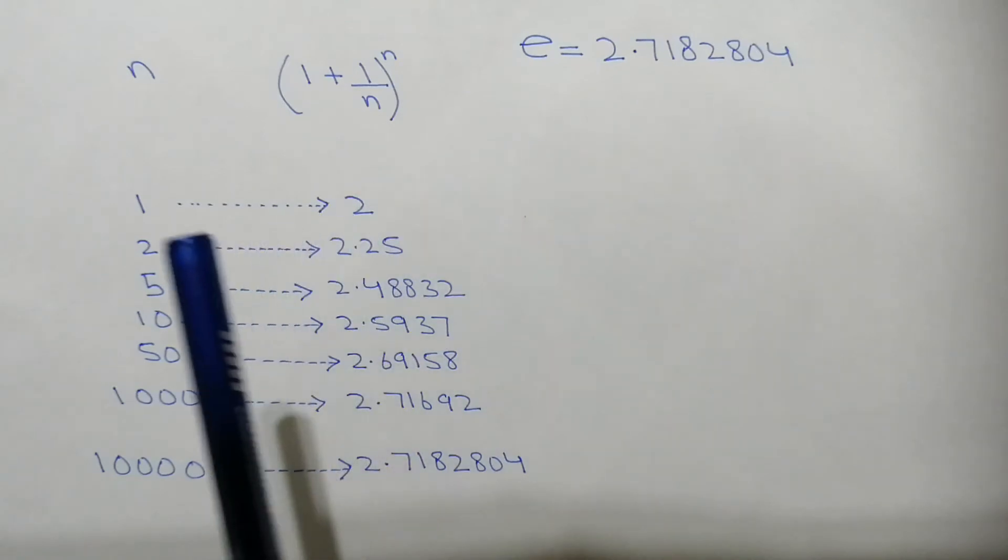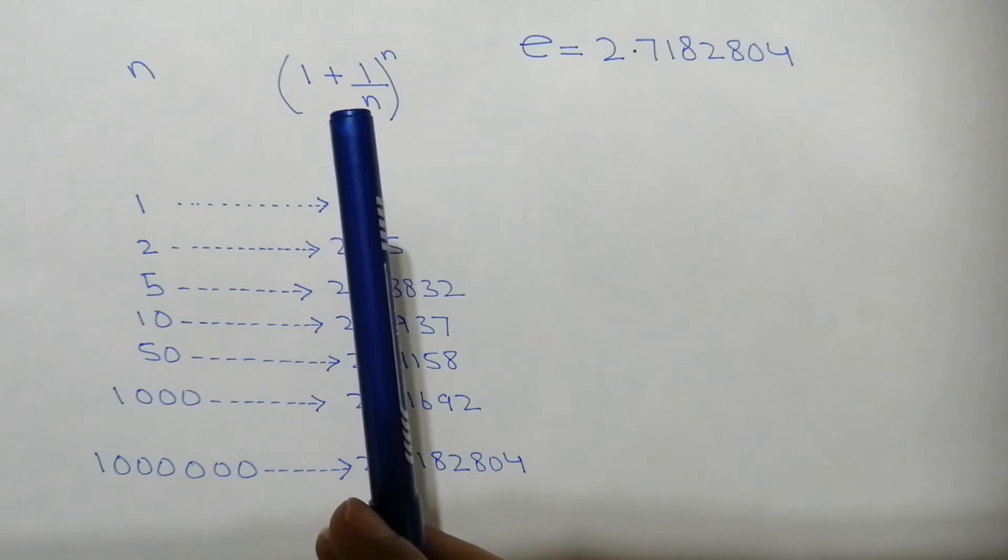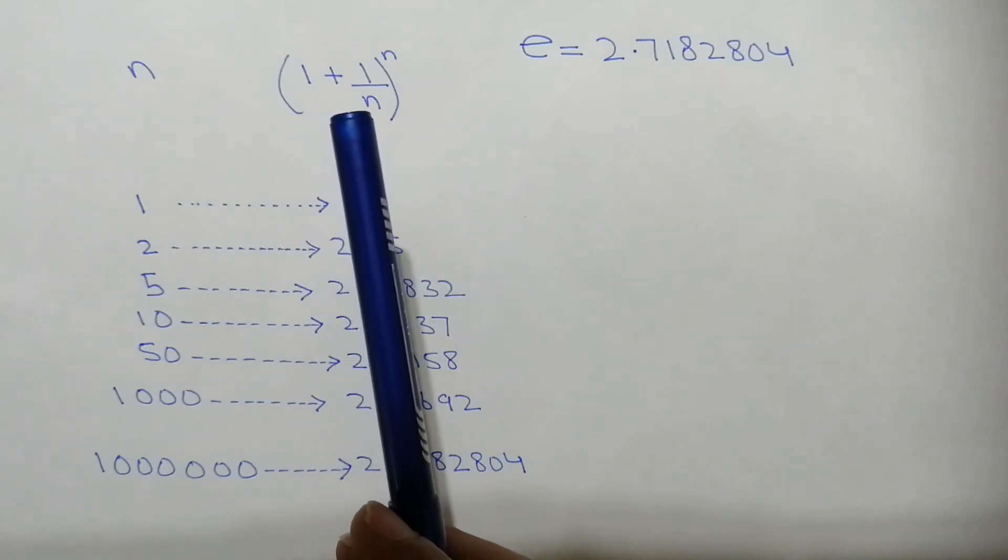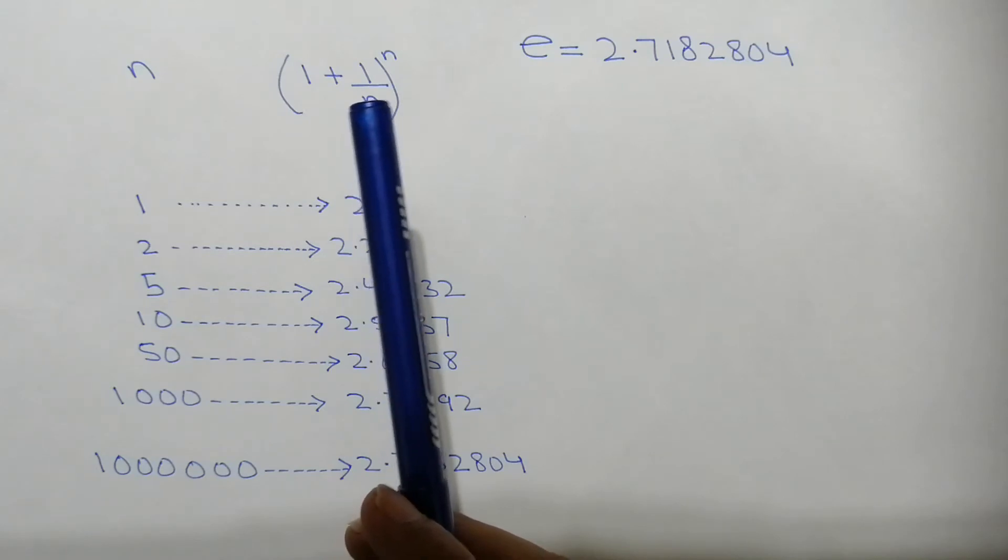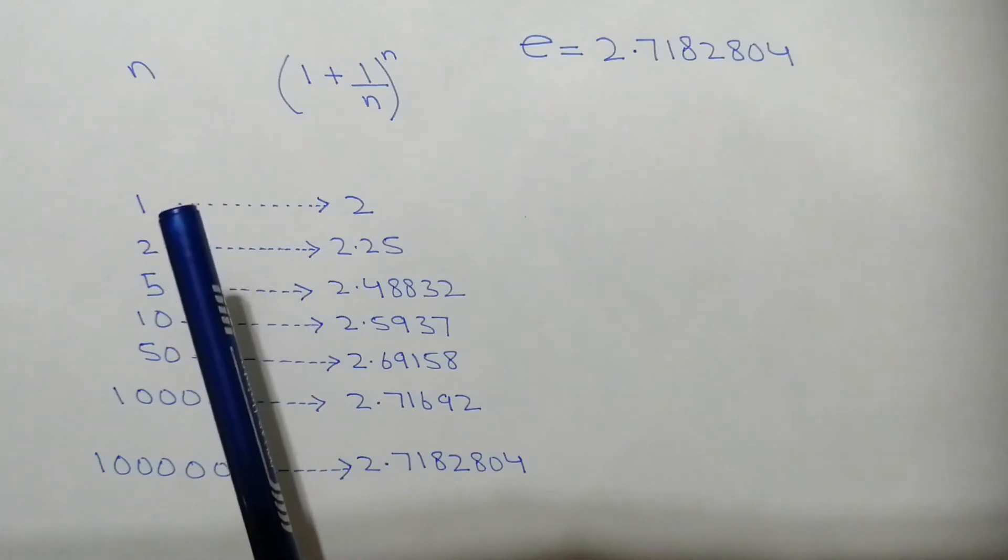The value of e comes from this formula: (1 + 1/n)^n. If we increase the value of n slowly and gradually, and if we put the value of n = 1, then